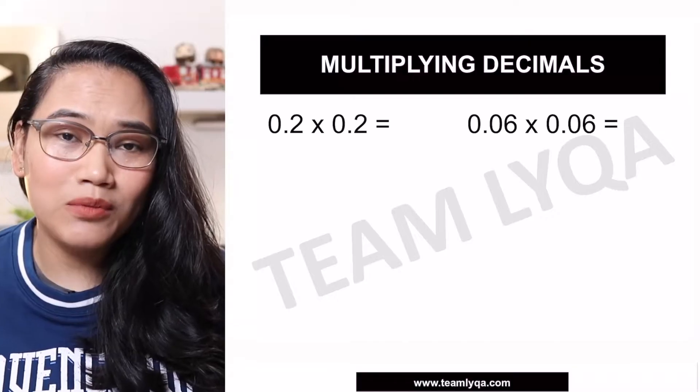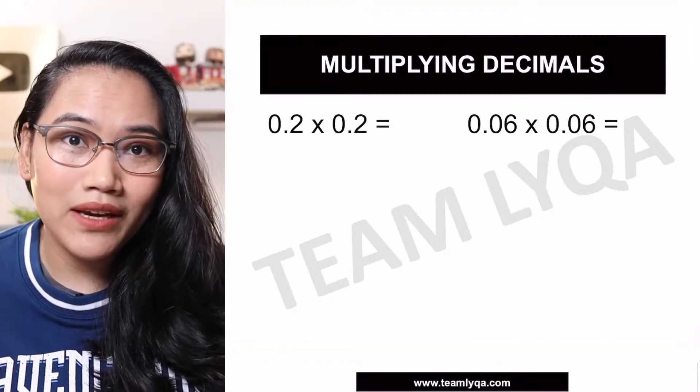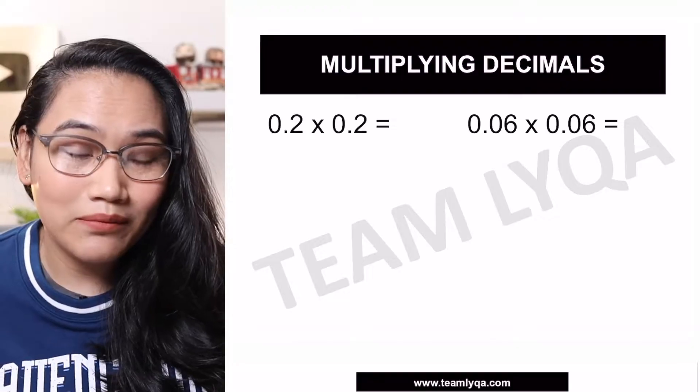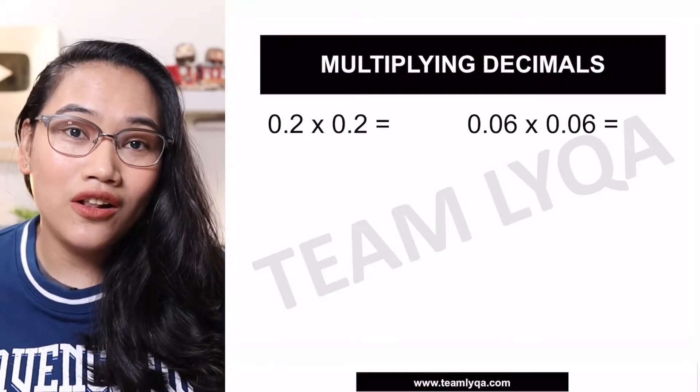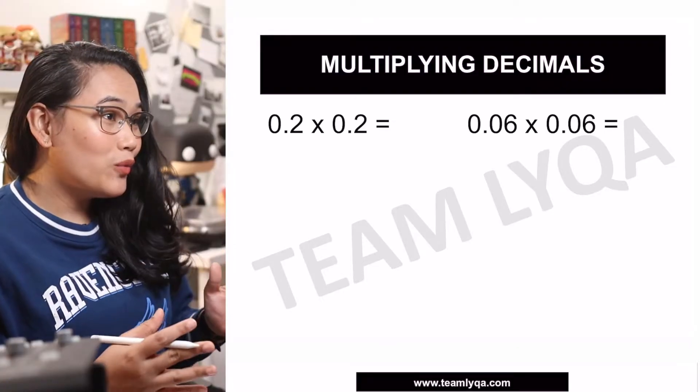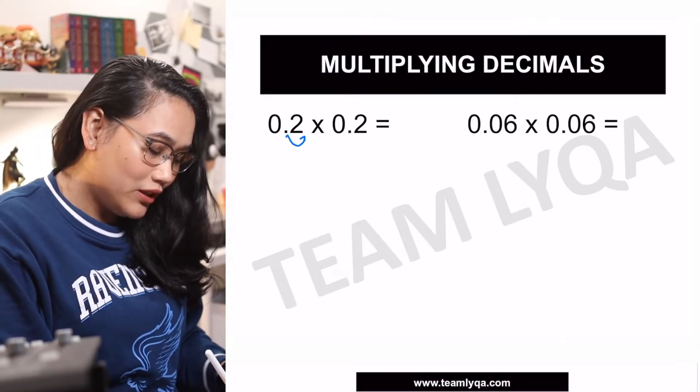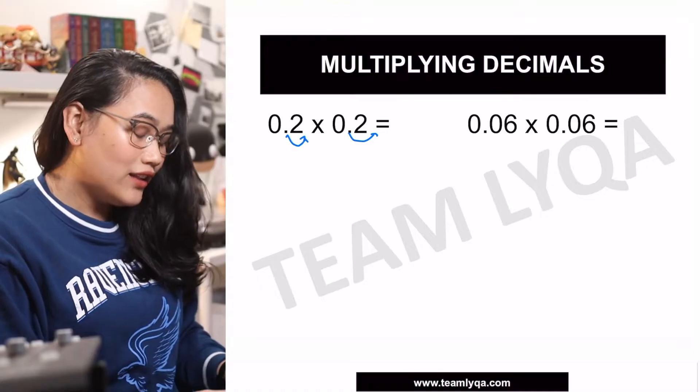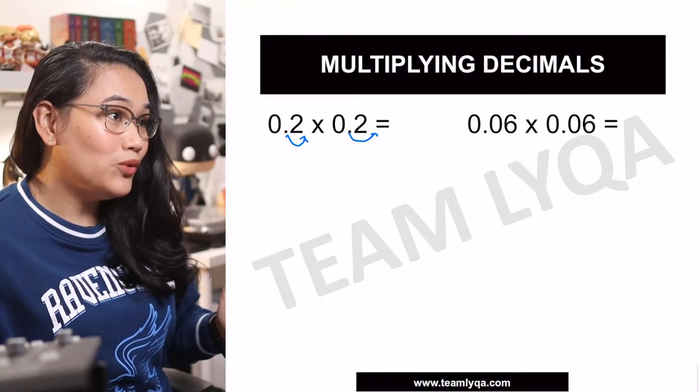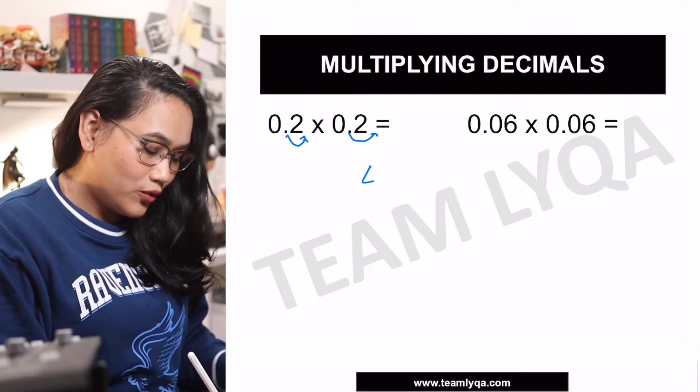One of the ways to multiply decimals is, you just move the decimal place of the two numbers you're multiplying. That way, you can treat it as 2 times 2, and then you do that. So 2 times 2 is 4.